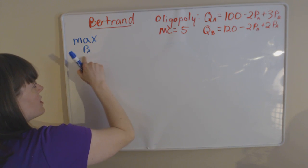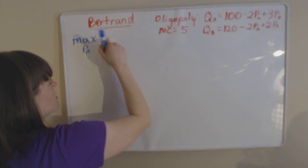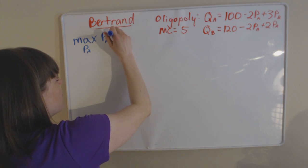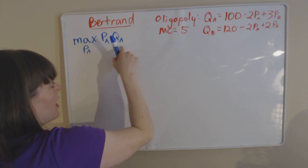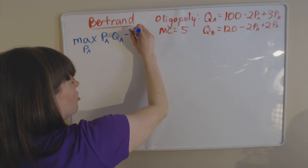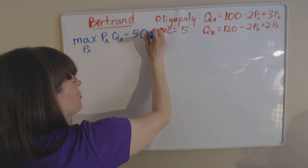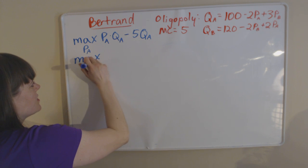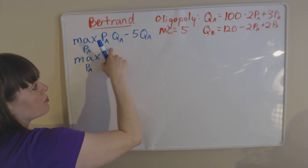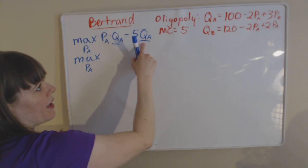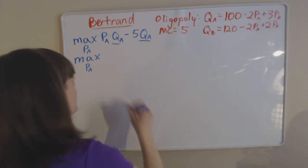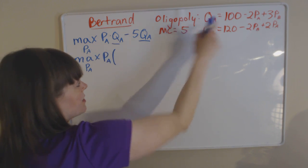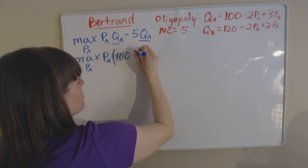We start with the price of firm A as the choice variable for firm A's maximization problem. As with all maximization problems, we're going to have price times quantity of firm A as our total revenue, minus marginal cost times the quantity of firm A as our total cost. So revenue minus cost is our profit. Our next step is to rewrite this by plugging in for the quantity of firm A — plugging in A's demand function.